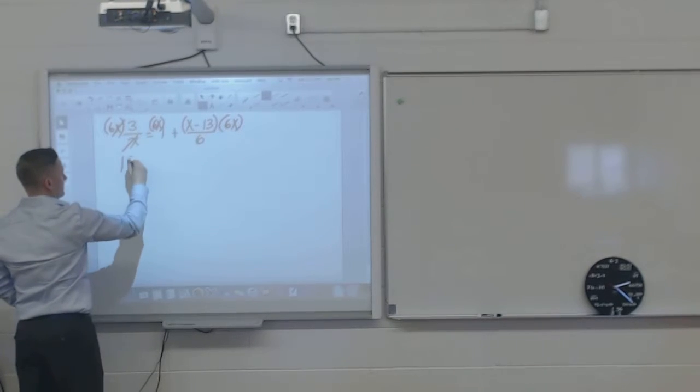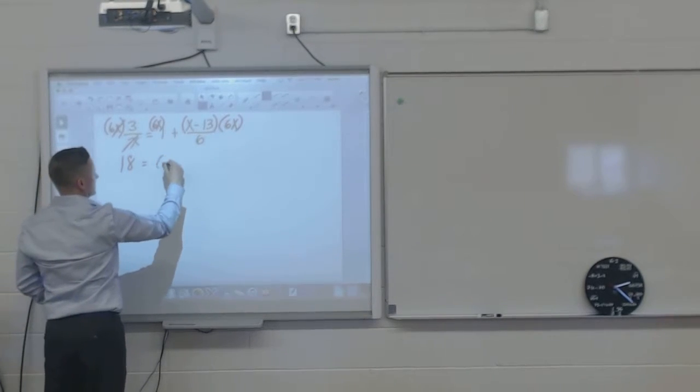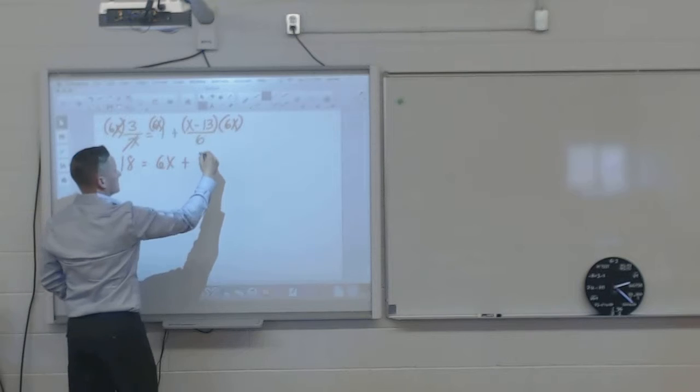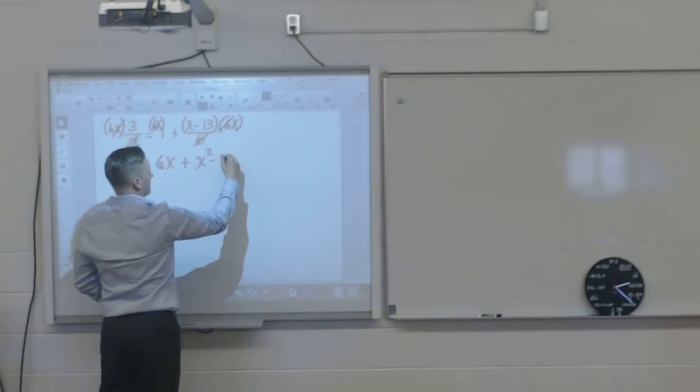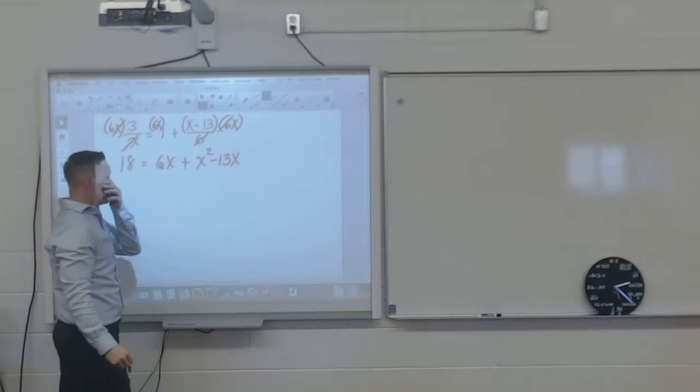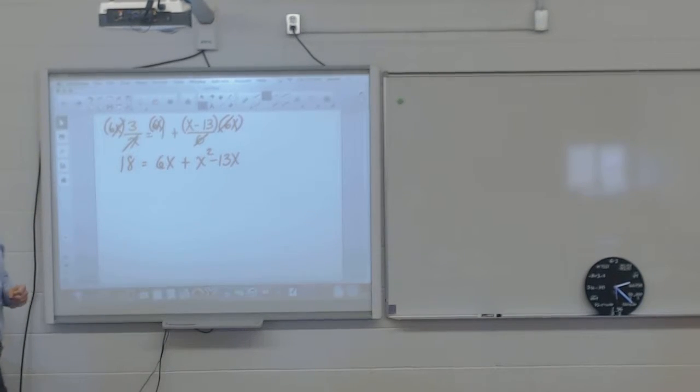Okay, that x cancels, leaves me with 18. 6x plus, 6 is cancelled, leaves me with x squared minus 13x.